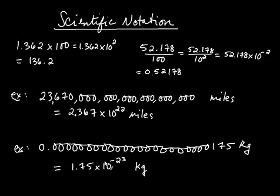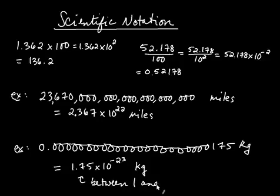I've converted this number into scientific notation. What you have to keep in mind is that the first number you get is always between 1 and 10, and then you multiply that number by some power of 10, where the exponent can be positive if you have a really large number, or negative if you have a really small number.